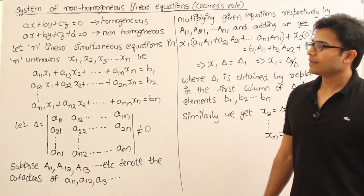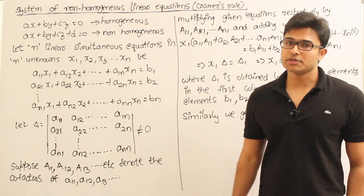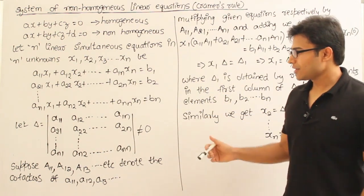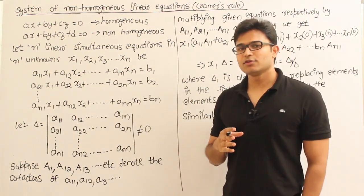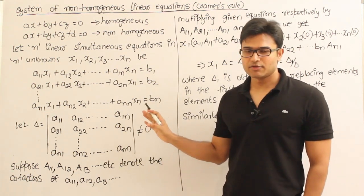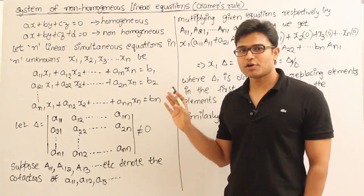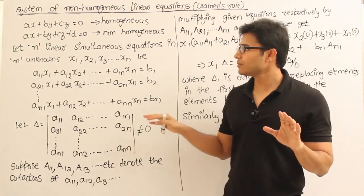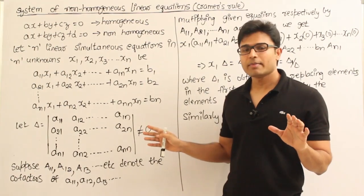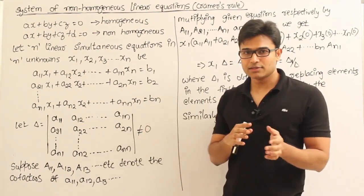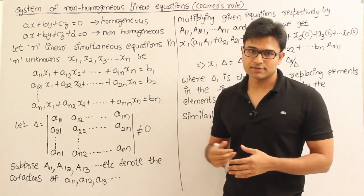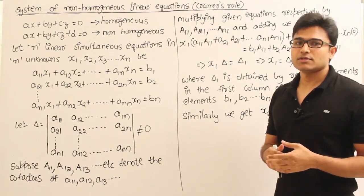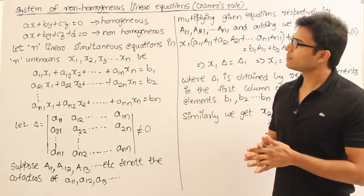Let's see how to solve a system of non-homogeneous linear equations using Cramer's rule. I'll explain the method. Even if you're not able to understand it now, don't worry — we're going to do lots of examples and the concept will be clear. Knowing the method might also help you in interviews, where they ask about linear algebra topics like how Cramer's rule works.